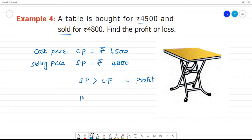Clear? So what is the profit formula? Profit is equal to selling price minus cost price. So that is equal to 4,800 minus 4,500.